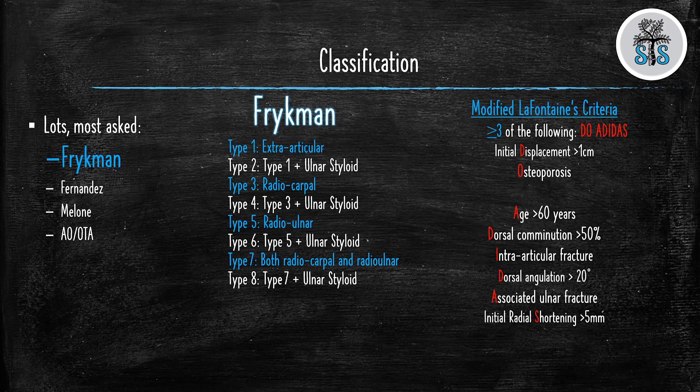The modified Lomphotanes criteria: if you have 3 or greater than any of these, then it's going to predict with some certainty that the fracture we reduced and tried to treat non-operatively will fall out of alignment and we're going to have to take it to the operating room. Just remember — do ADIDAS: initial displacement greater than a centimeter, severe osteoporosis, older than 60, dorsal comminution greater than 50%, intra-articular fracture, dorsal angulation greater than 20 degrees, associated ulnar fracture, or initial radial shortening greater than 5 millimeters — these predict failure of non-operative therapy.